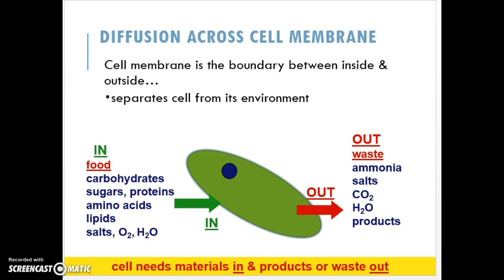The cell membrane's major job is to be a boundary between the inside and outside, separating the cell from its environment. At the same time, the cell needs to get materials in and out — it needs food, carbohydrates, sugars, proteins, amino acids, lipids, salts, gases like O2, and water. It also needs to get rid of waste: CO2, excess water, ammonia, and to maintain a balance of salts by exporting some as well.